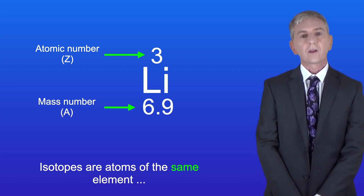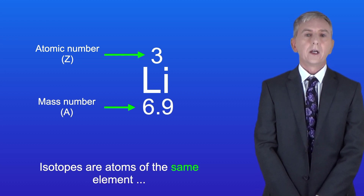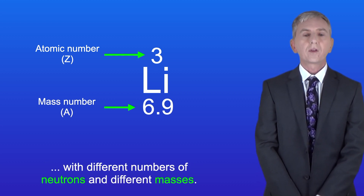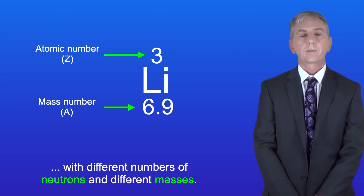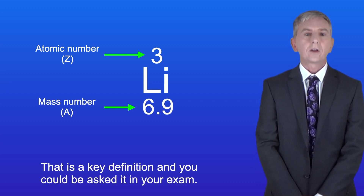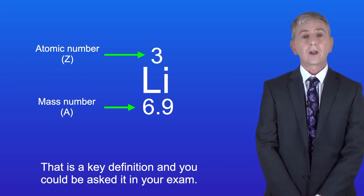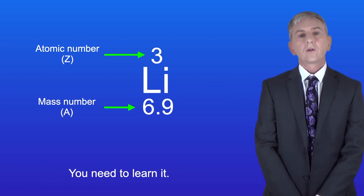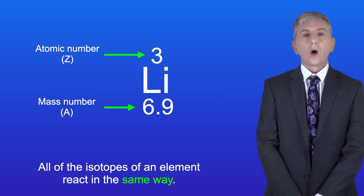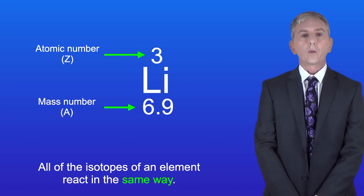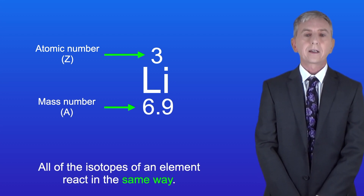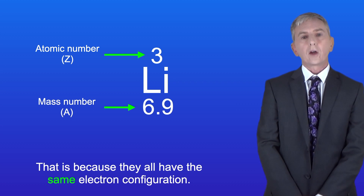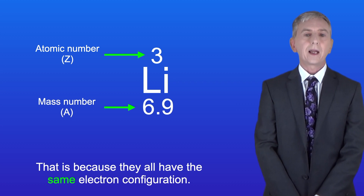Isotopes are atoms of the same element with different numbers of neutrons and different masses. That is a key definition and you could be asked it in your exam so you need to learn it. All of the isotopes of an element react in the same way and that's because they all have the same electron configuration.